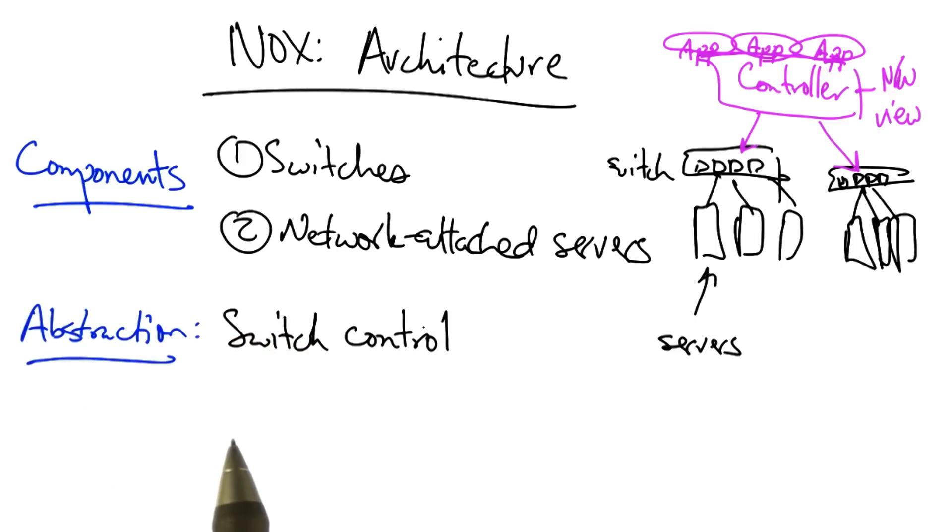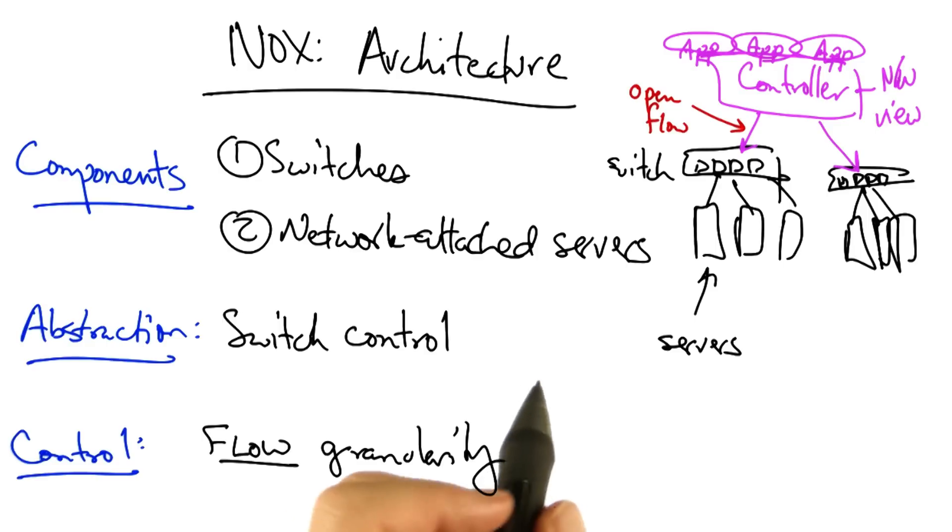The basic abstraction that Nox supports is a switch control abstraction, where OpenFlow is the prevailing protocol. Control is defined at the granularity of flows, which are defined by a 10 tuple in the original OpenFlow specification.